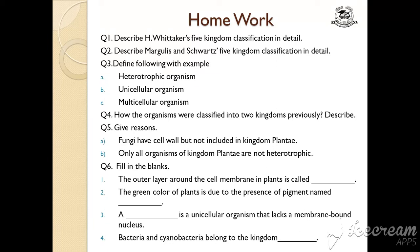Then one by one write the names of all the kingdoms and describe their characteristics — what is given in the book and what you have seen in the video. Second question: describe Margulis and Schwartz's five kingdom classification in detail. Question three: define the following with examples — heterotrophic organisms, unicellular organisms, multicellular organisms.